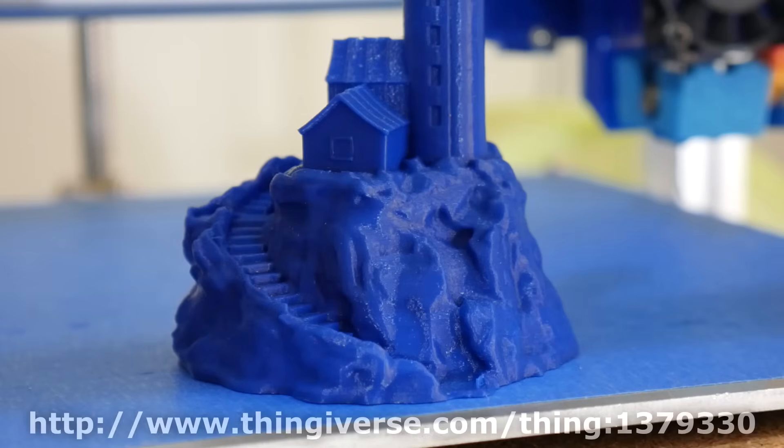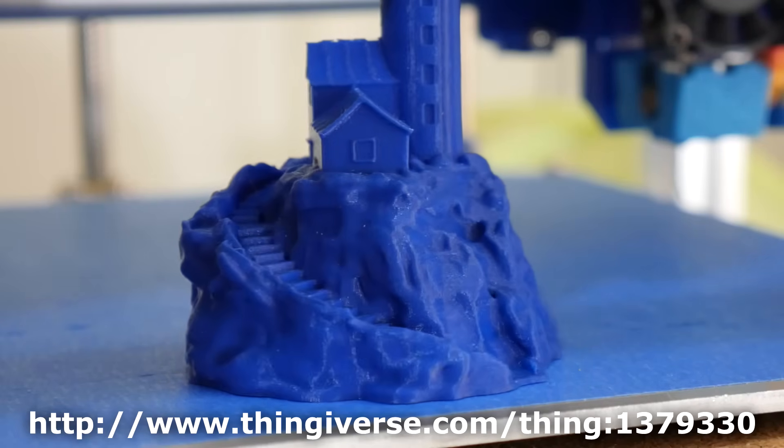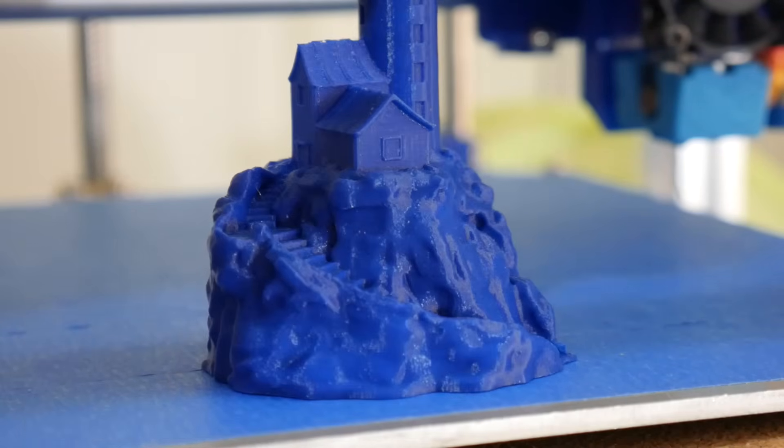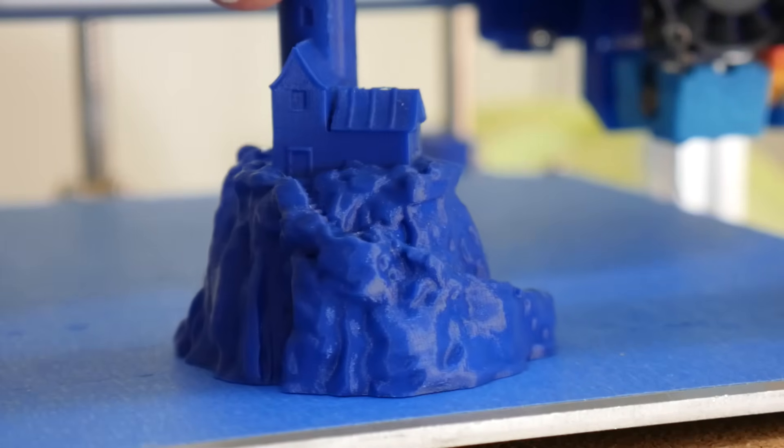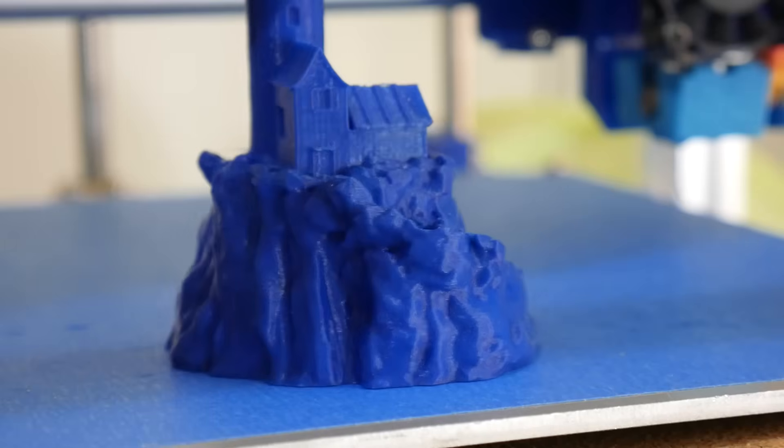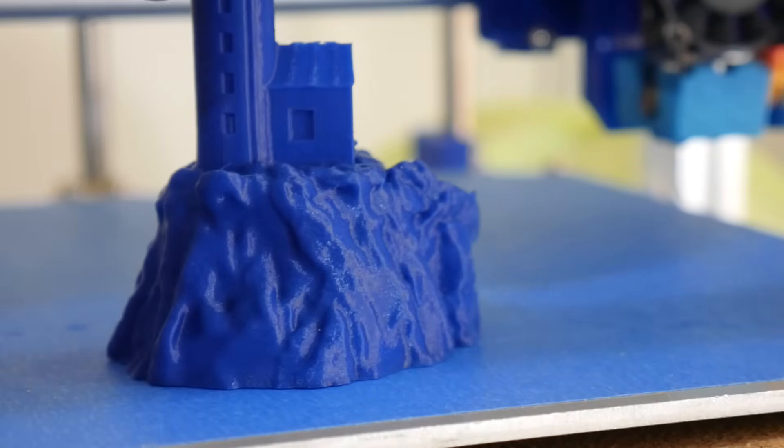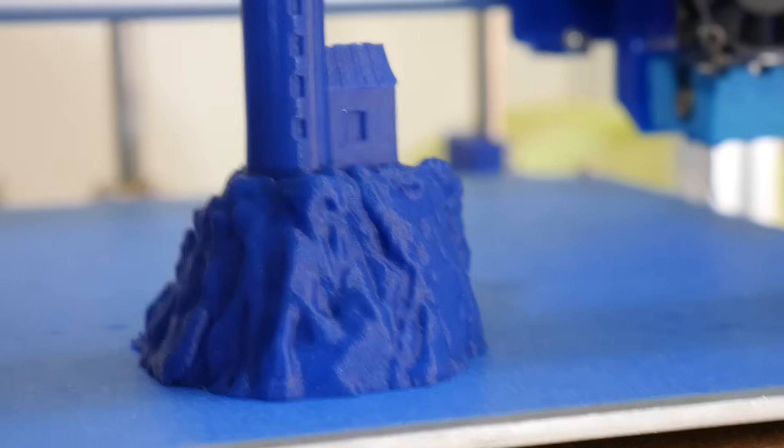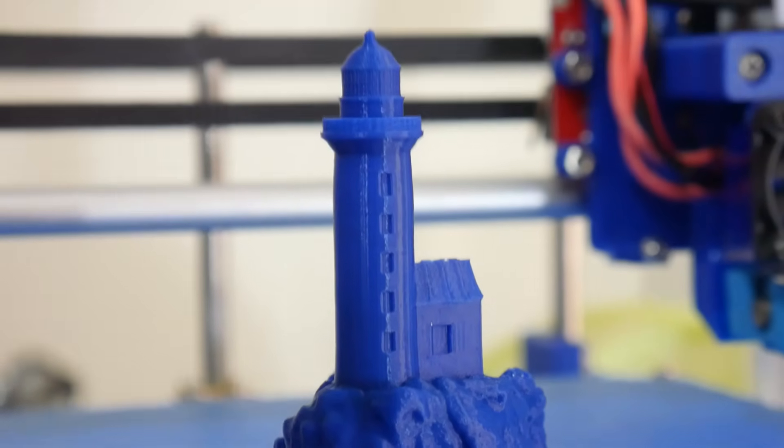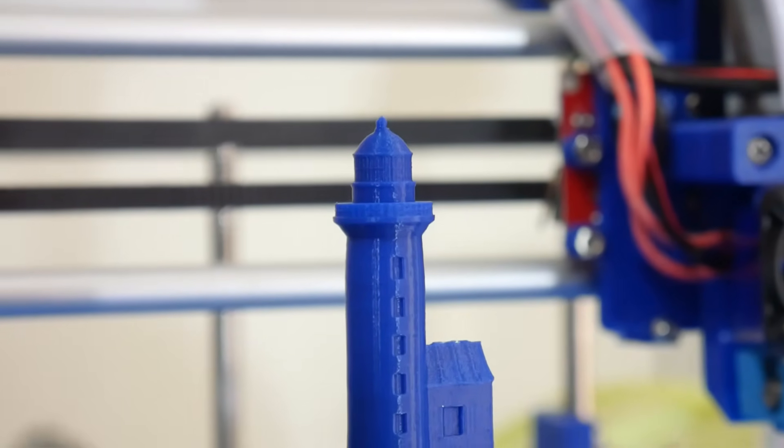And here's another test print. This is the Lighthouse on a Rock printed at 70% scale, at 0.1 millimeter layer height with Polymaker's PLA Blue, the Poly Plus. As you can see, it's come out absolutely beautifully as well. Heaps of detail in this particular part. If I scroll up, I just want to show you the tip of the lighthouse because I wasn't expecting all this resolution to actually be present in this piece.